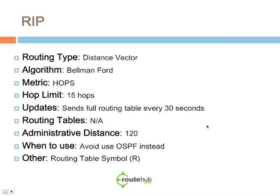Just like a distance vector routing protocol, RIP will send its full routing table every 30 seconds whether there's a change or not. RIP does not contain its own neighbor or topology table. Its administrative distance is 120, so if other routing protocols like OSPF or EIGRP are configured, RIP would definitely be lower priority for injecting routes into the routing table. I would recommend avoiding RIP wherever possible.